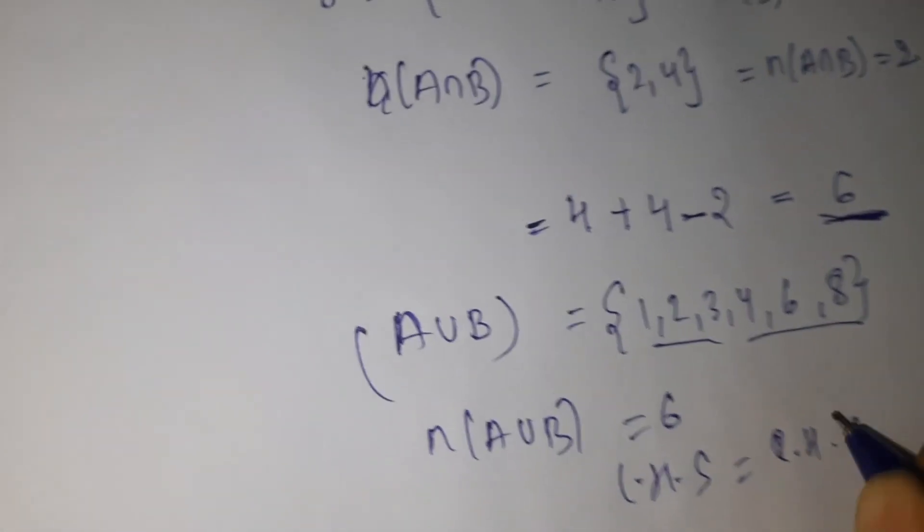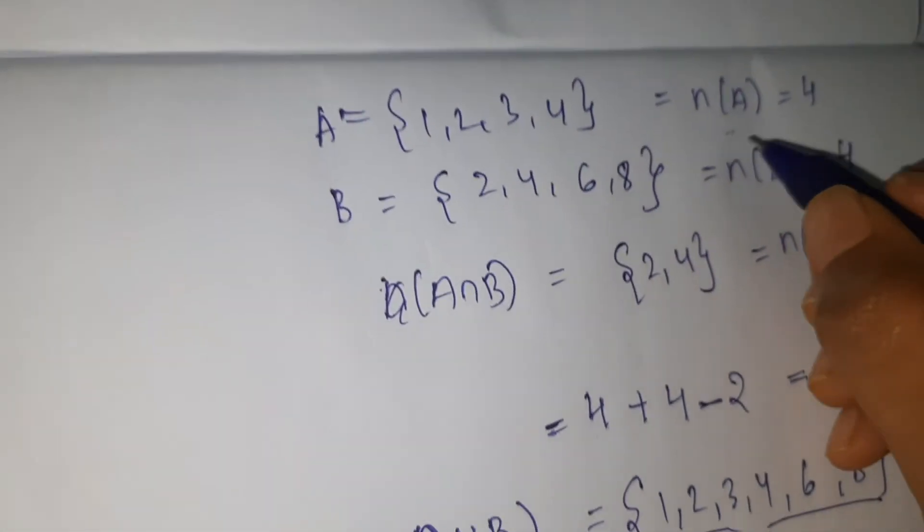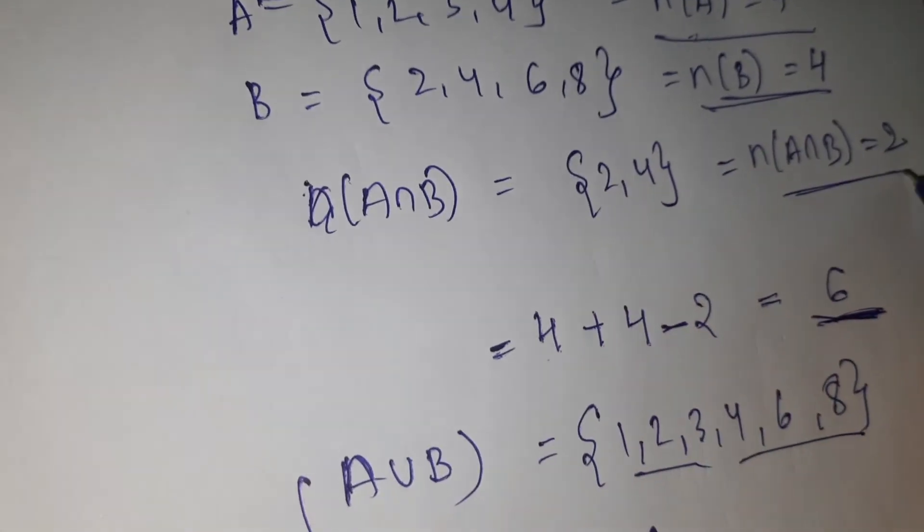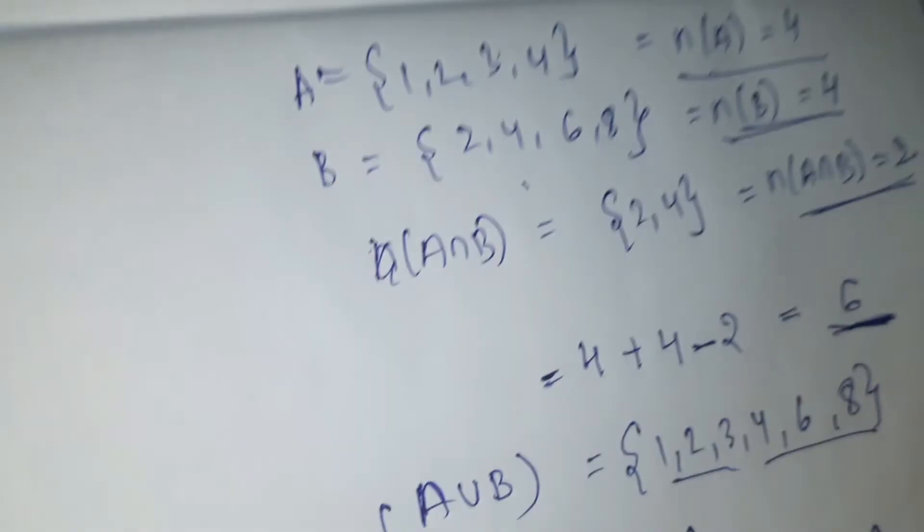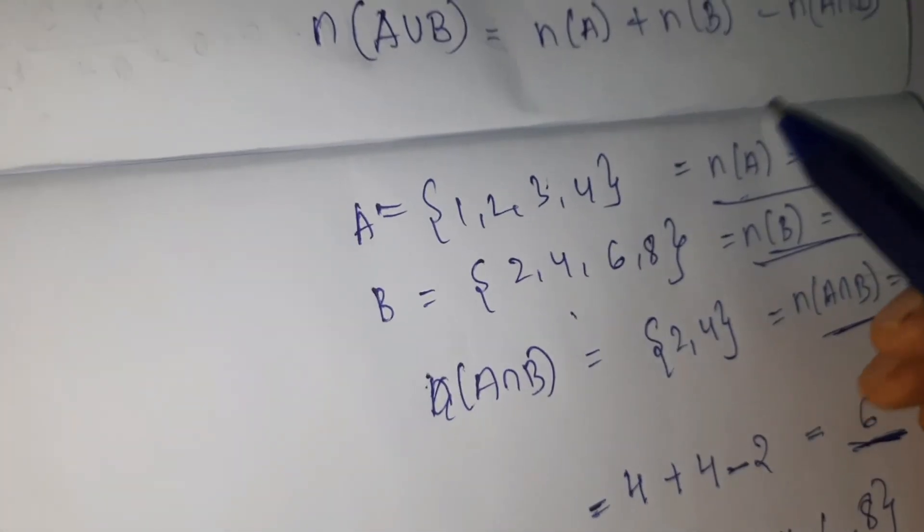So whenever you get certain problems, they'll only mention these values—these three values they'll give you. They won't give the set, they'll just give number of elements and they'll ask you to find n(A intersection B). So at that time you need to use this formula.